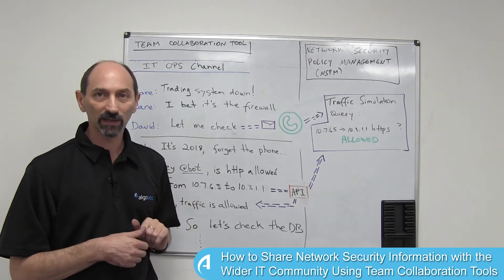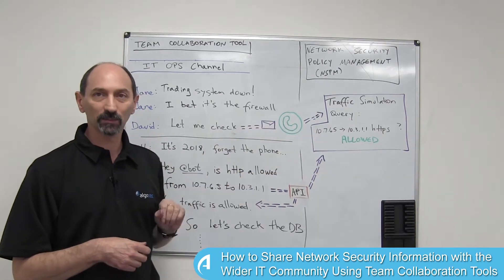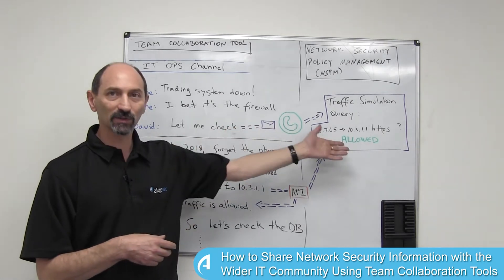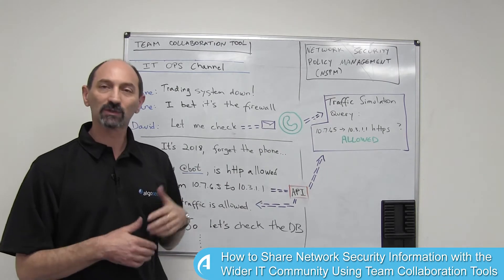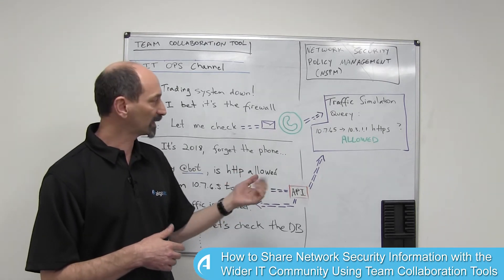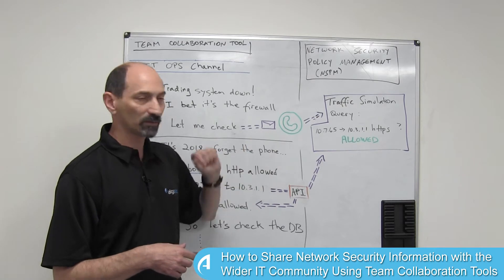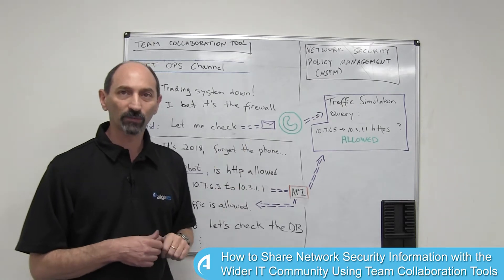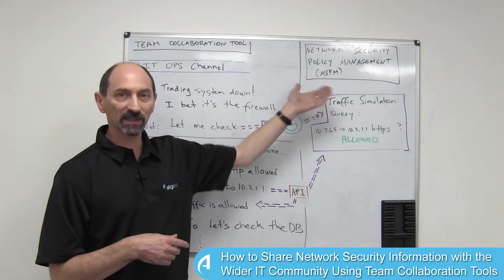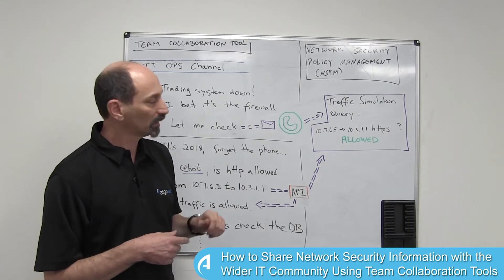How would David check? Well, David is not part of the security team and does not have access to this system. So he needs to contact his colleagues that do have access. He would either send them an email or call them on the phone and ask: is this traffic allowed or not?